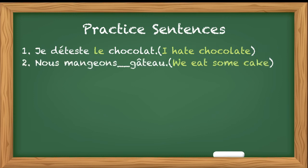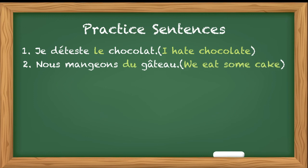Second one is: Nous mangeons - dash - gâteau. It will be du gâteau because mangeons means to eat. When we talk in terms of eating, we can eat some quantity and not the general or the whole quantity. So nous mangeons du gâteau - we eat some cake.